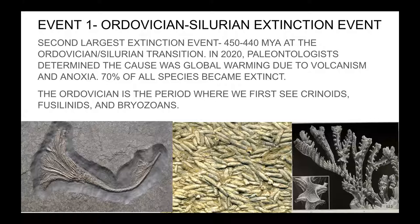The first big extinction event — actually the second largest — occurred about 450 to 440 million years ago at the Ordovician-Silurian transition. In 2020, paleontologists determined that the cause of this second largest extinction event was global warming due to volcanism and anoxia. Anoxia means not enough dissolved oxygen in the water — fish have to breathe oxygen with their gills, and if there's not enough dissolved oxygen, they die. About 70% of all species became extinct. During this time, we first see foraminifera, crinoids, and bryozoans.